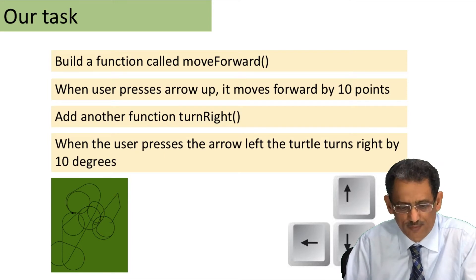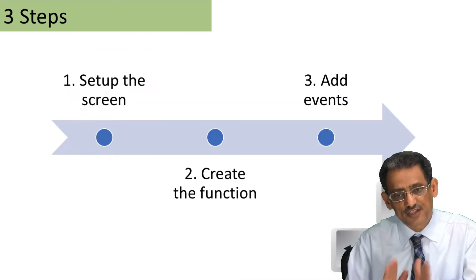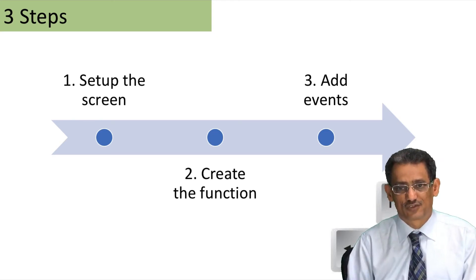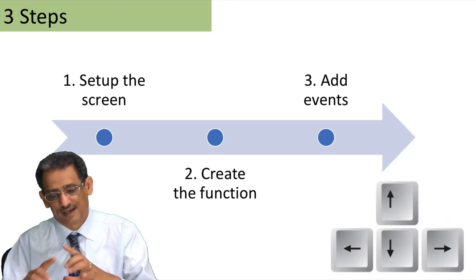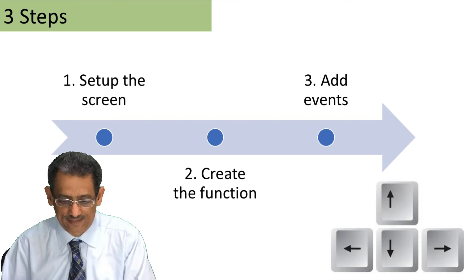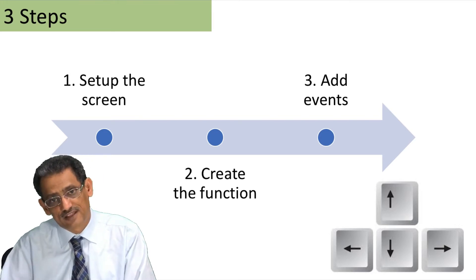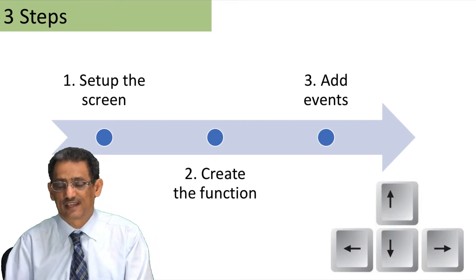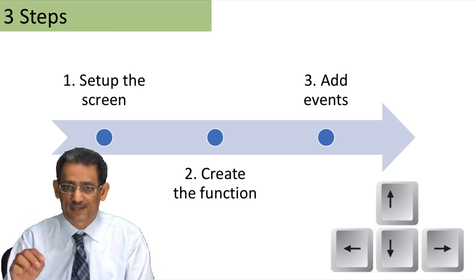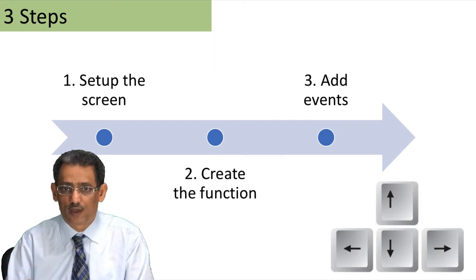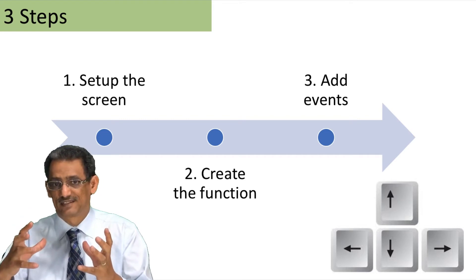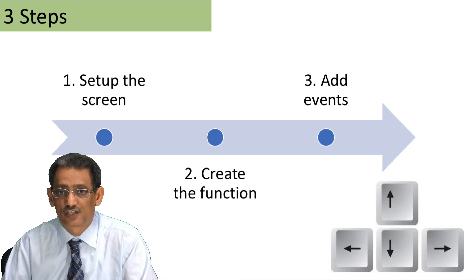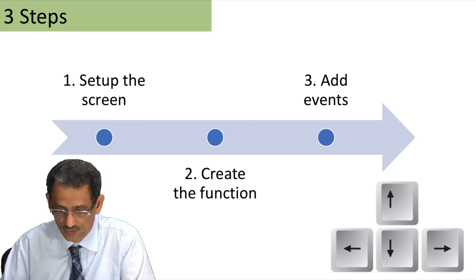If you know those two functions, you can create other functions to go backward, go left, and do other things. Using the arrow keys you will draw something like this — I'm sure you'll draw better than that. There are three steps you need to do: the first step is to set up the screen, give it a color and a size; the second is to create the functions we need; and the third is to add an event — an action triggered when the user does something.